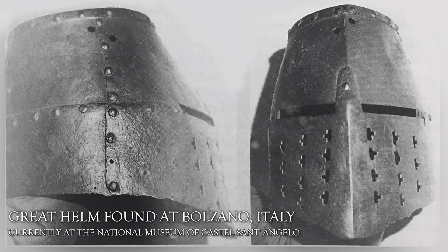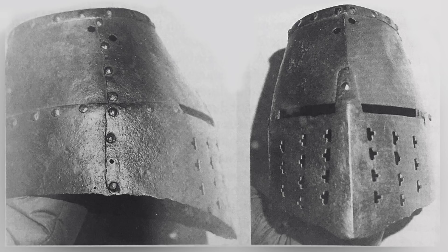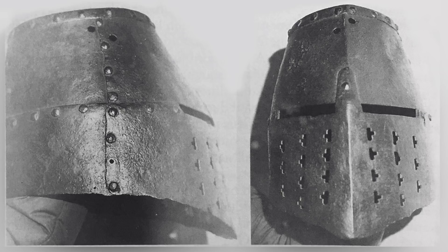The surviving great helm seen here dates from the end of the 13th century to the beginning of the 14th century. It's believed to be of German make and it's located currently at the National Museum of Castel Sant'Angelo. We are going to do our best to reproduce this armor. I think it's a good starting point because of its simplicity. There are a limited number of plates needed for this design, just five, and I think it's a perfect starting place for a beginner. Now it would be ideal if we could handle the object in person and make measurements and tracings and take our own photographs, but we're not that fortunate.